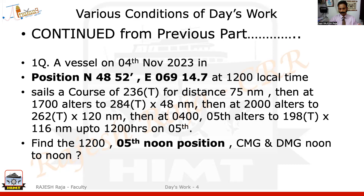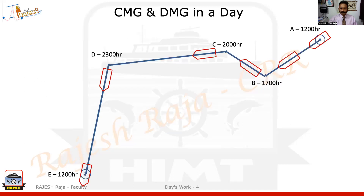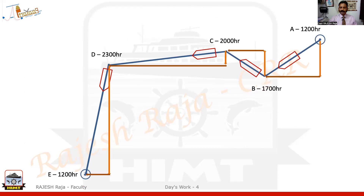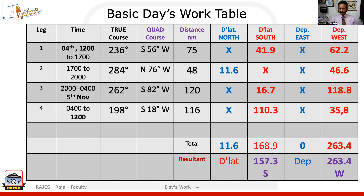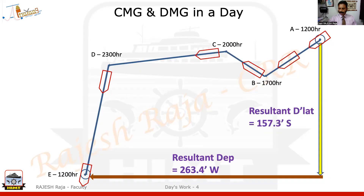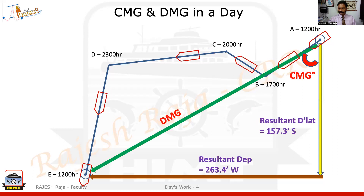From the next question onwards, you can do it as a single stage — we don't have to break it up. We saw this question was having a few legs, then we broke them into individual DLAT and departures. Then we made a table. We found out that the total sailing is taking you DLAT south and departure west, so we were on a southwesterly course. This is the resultant DLAT and resultant departure. The resultant distance is called DMG and the resultant course is called CMG.